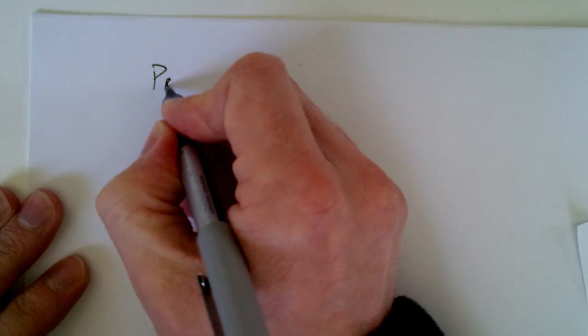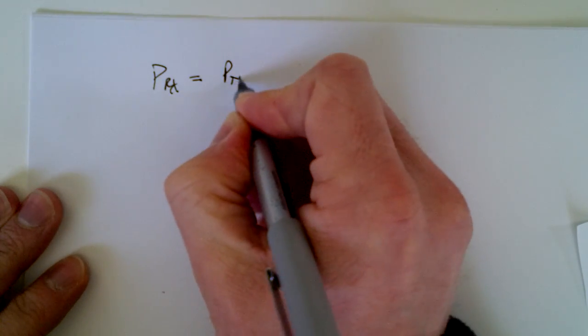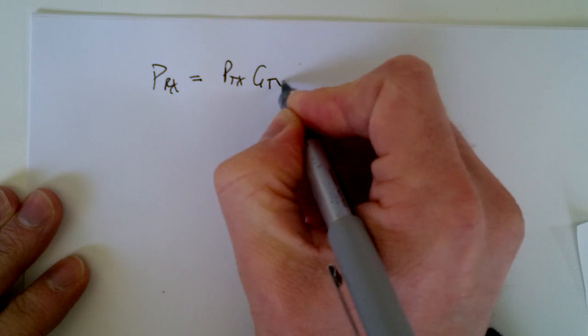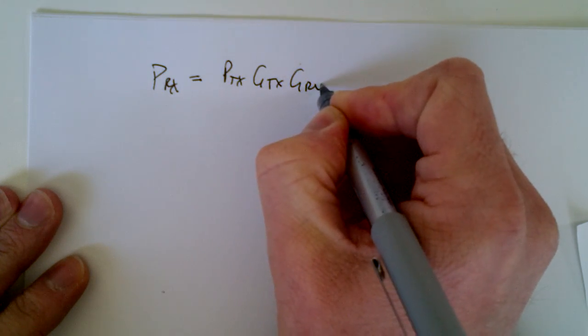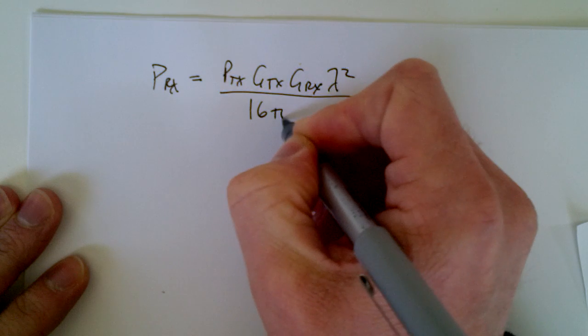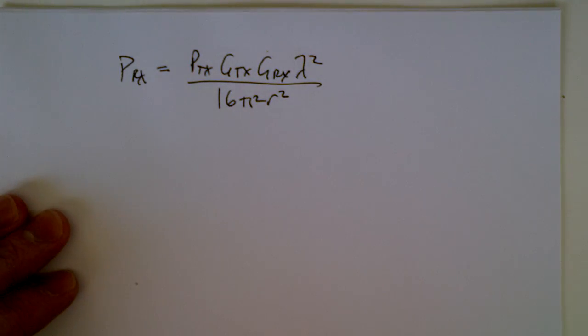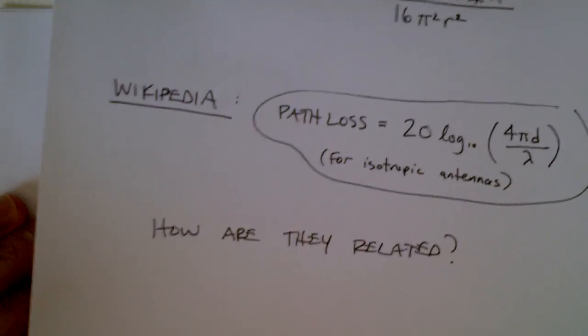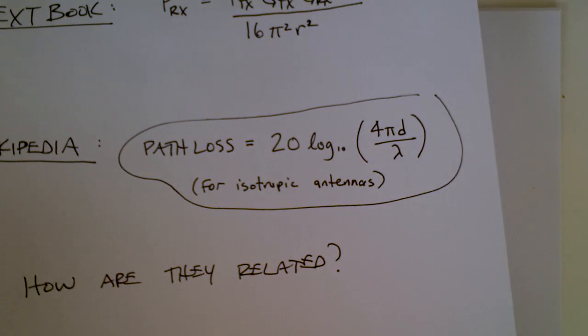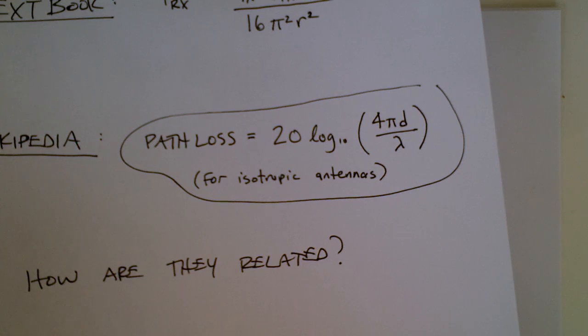So if we have power received equals transmit power times the gain of the transmit antenna, gain of the receive antenna, lambda squared over 16 pi squared r squared, like that. And you want to know, what does that have to do with the other formula? This one here, this 20 log, that stuff. That says for isotropic antennas.